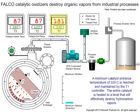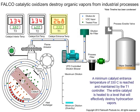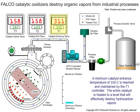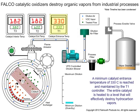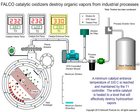The T1 controller regulates the heaters, which warm the catalyst bed with hot dilution air. A minimum catalyst entrance temperature of 330°C is reached and maintained by the T1 controller, heating the entire catalyst to a level that will effectively destroy hydrocarbon vapors.